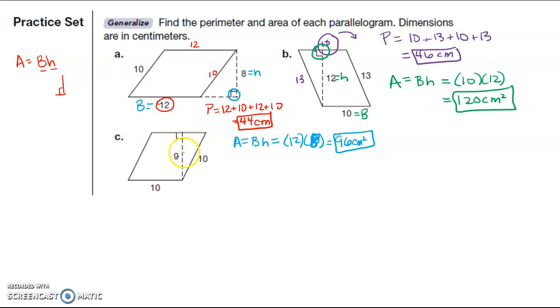All right, last one on this page. If this side is 10, this side is 10, and if this side is 10, this side is 10. So my perimeter is going to be 10 plus 10 plus 10 plus 10, which is 40. My area is base times height, so my base is 10, my height has to make that 90 degree angle, so this is my height. So I have 10 times 9 is 90 centimeters squared.